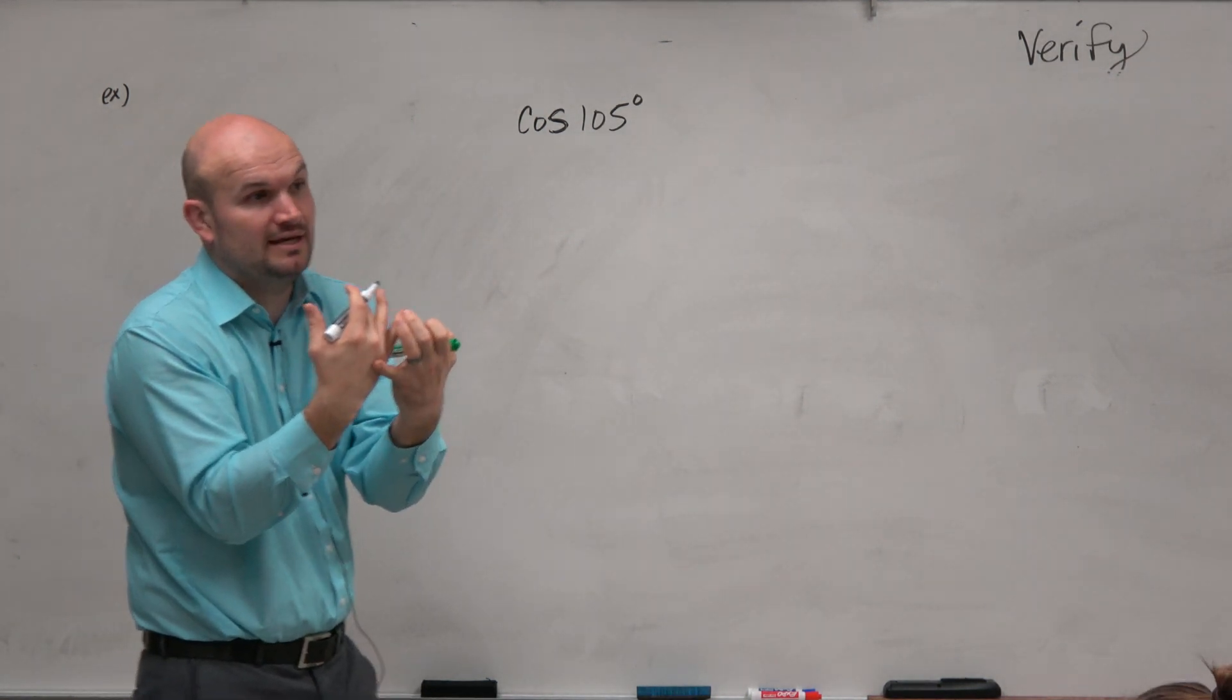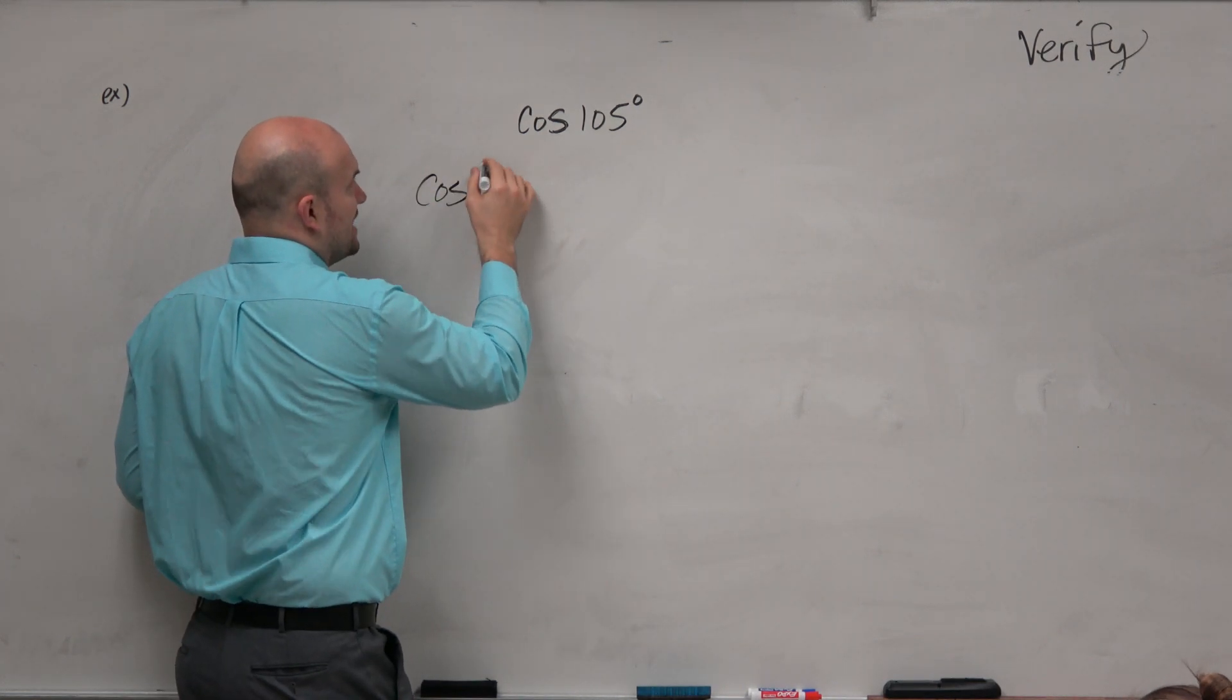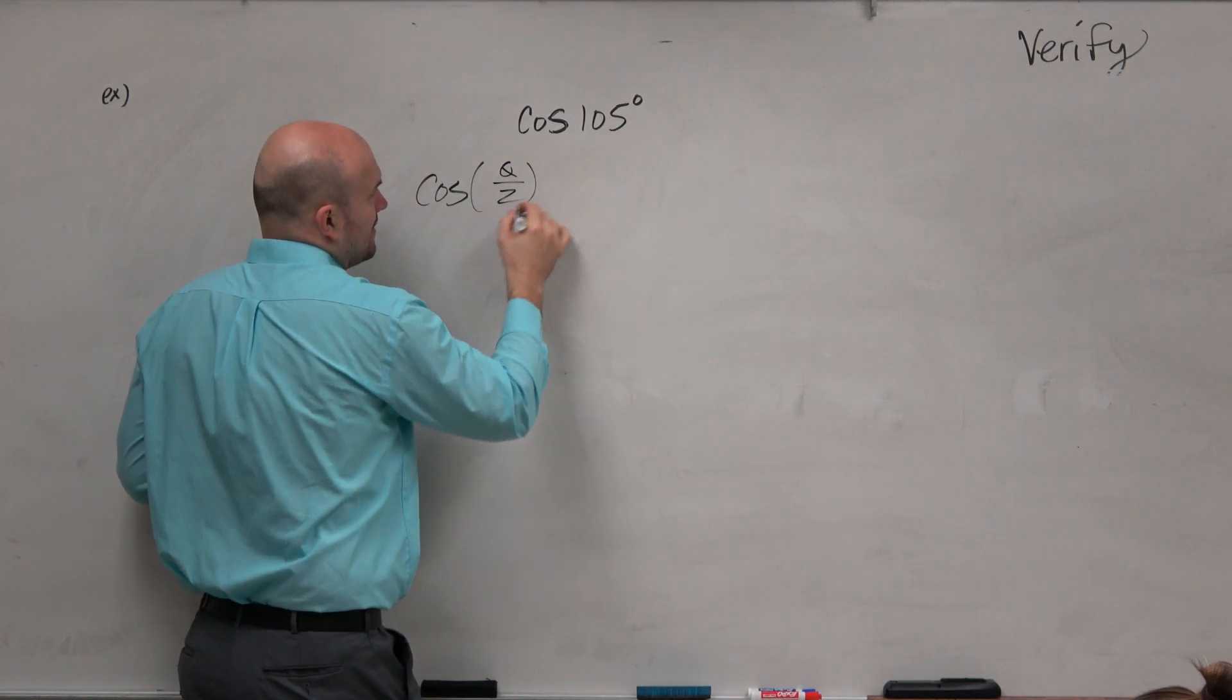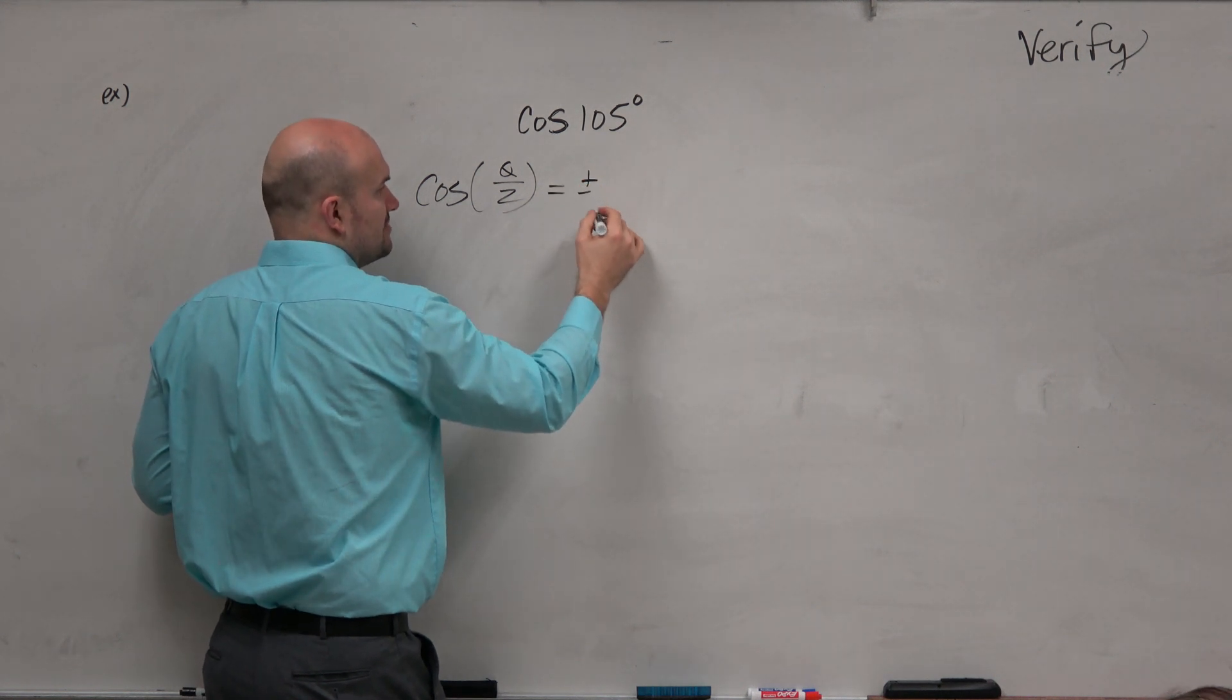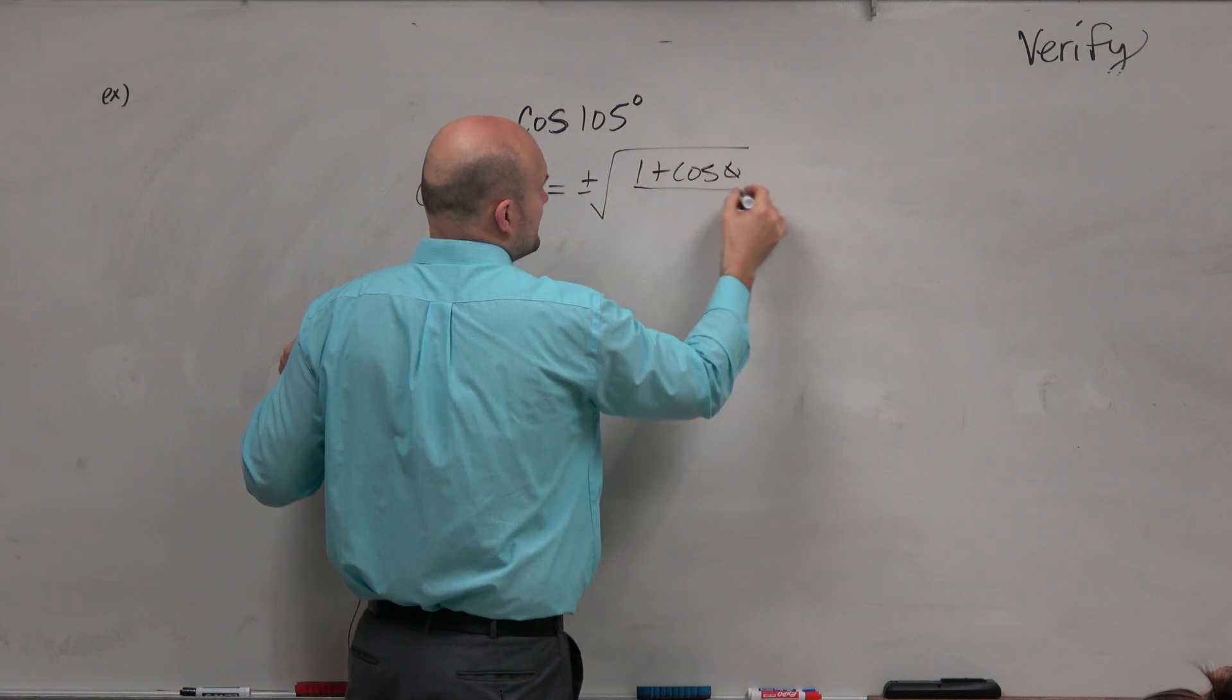basically, we're just looking at our cosine formula. Or I'm going to ask you to find the half angle formula. So basically, what that means is the cosine of theta divided by 2 equals plus or minus the square root of 1 plus cosine of theta divided by 2.